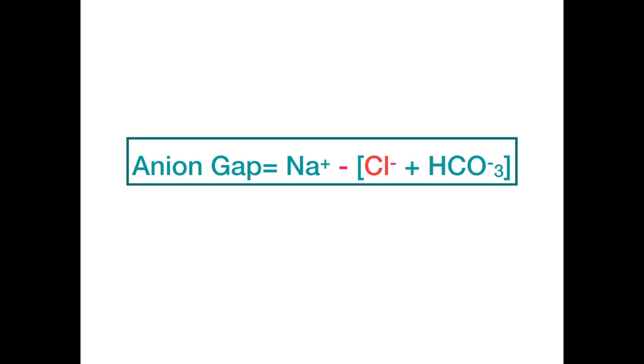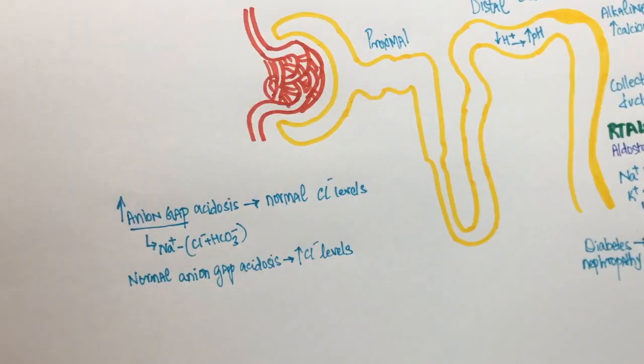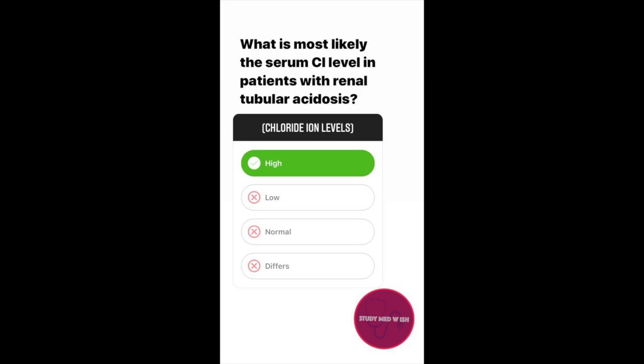In renal tubular acidosis, the anion gap is normal. So, the chloride levels are likely to be high.